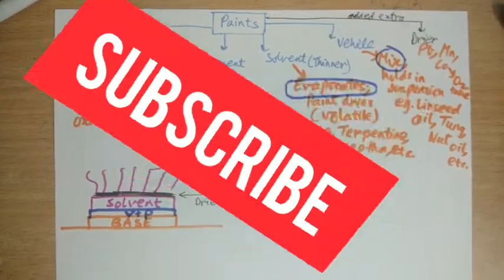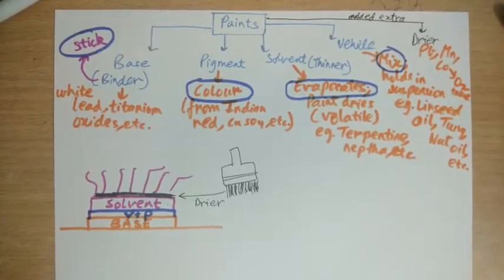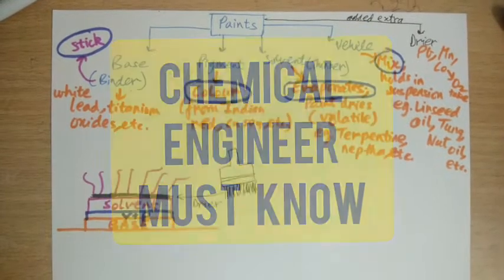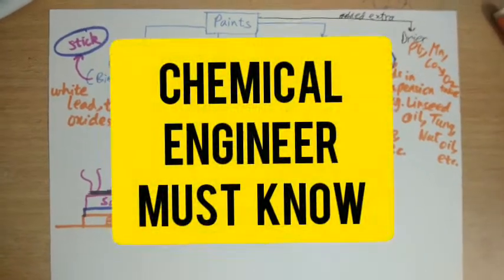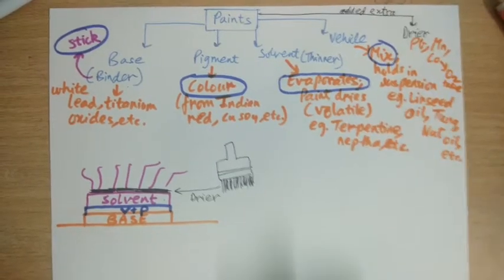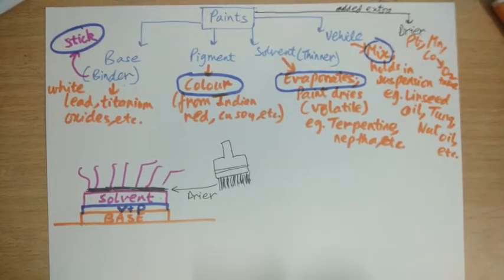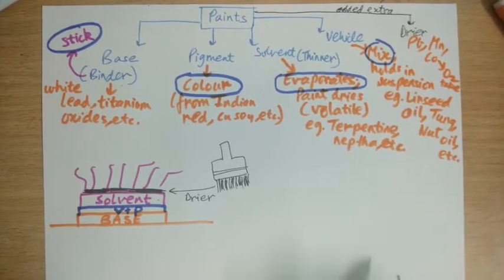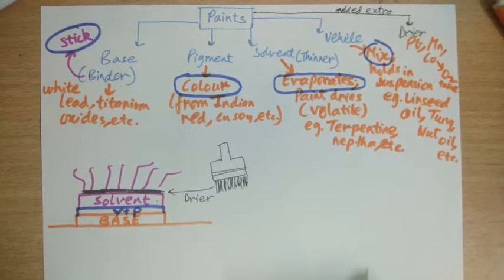One must always know how paints are formed, just as general knowledge or sometimes some understanding about the chemical engineering components. So here we have paint. Quickly we will discuss what are the components, how they are related, and what happens during paint application on walls or other stuff.